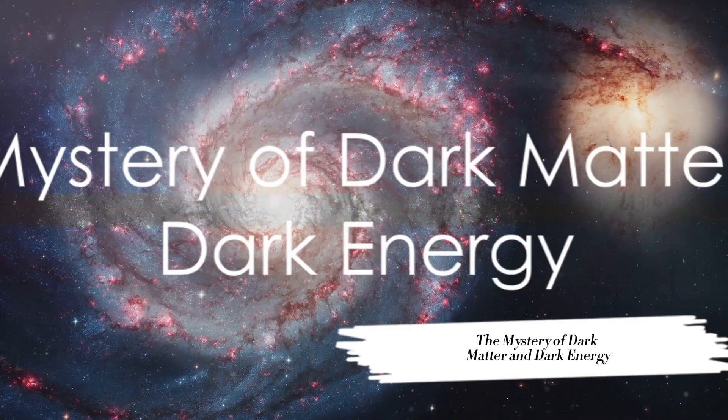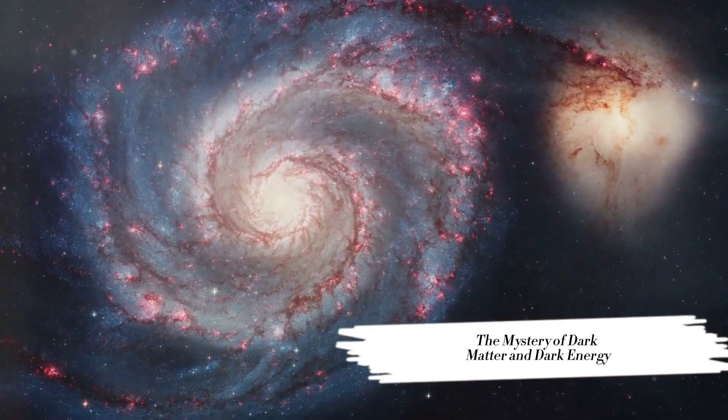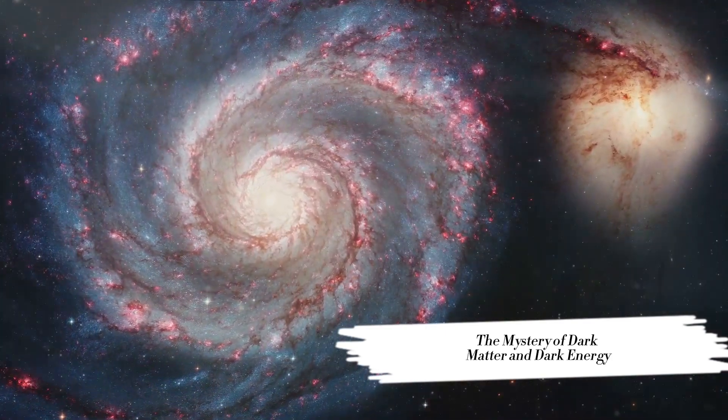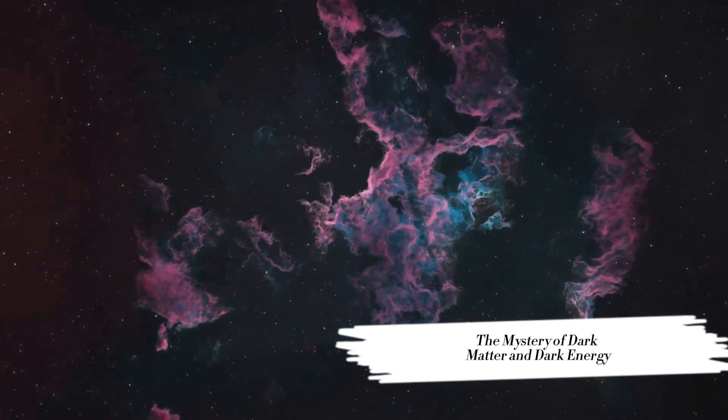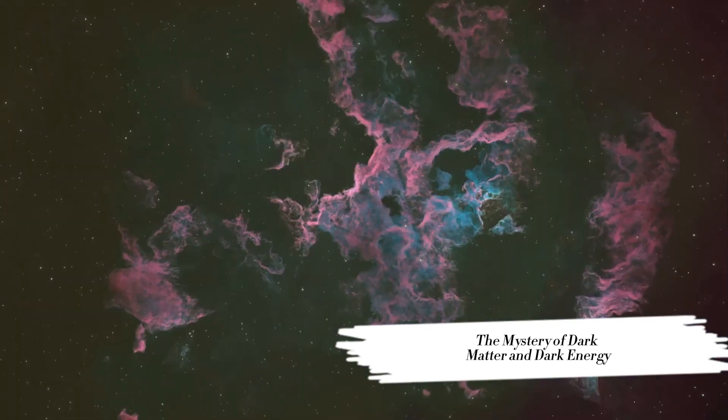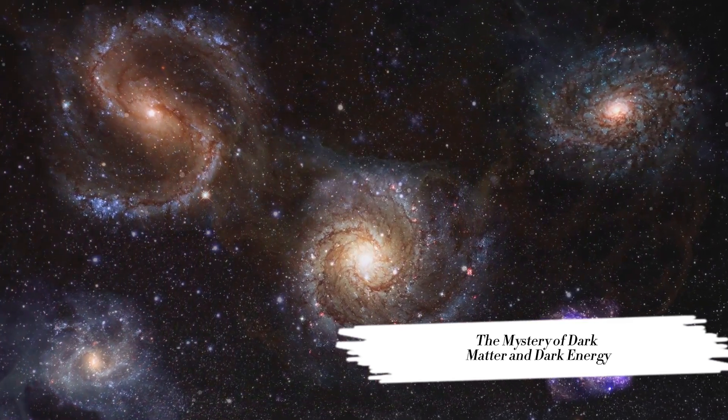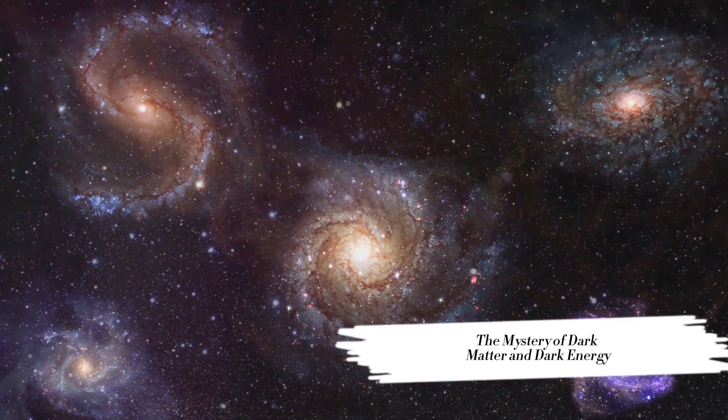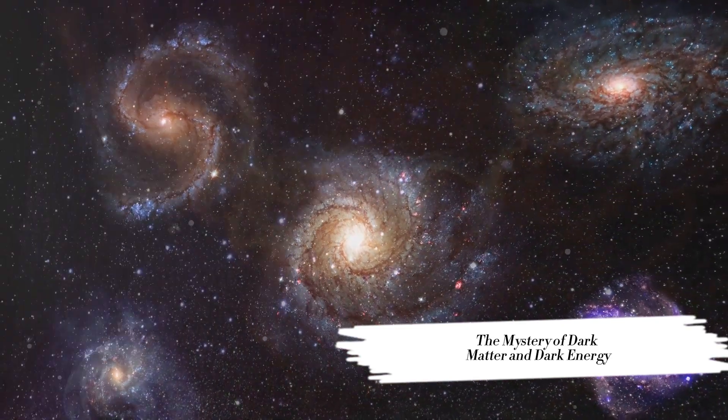Did you know that the visible universe is just the tip of the cosmic iceberg? Imagine an iceberg floating in the ocean, only a fraction of it is visible above the surface, while the majority remains unseen, hidden beneath the water. This is a fitting analogy for our universe, where the visible matter, stars, galaxies, and everything we can perceive, makes up less than 5% of the cosmos. The rest? It's a mystery we call dark matter and dark energy.